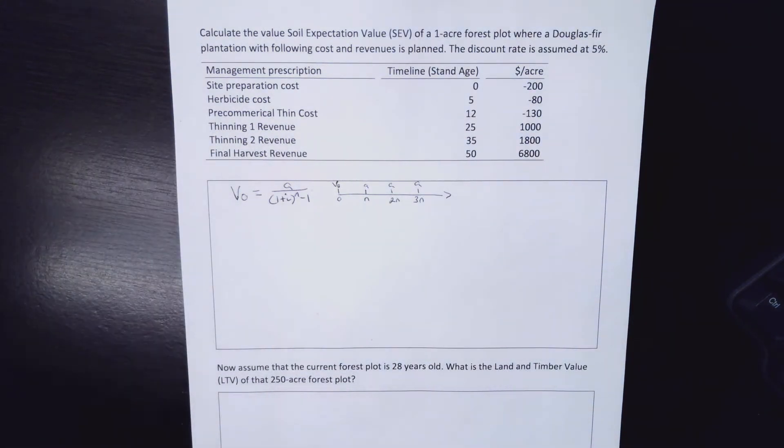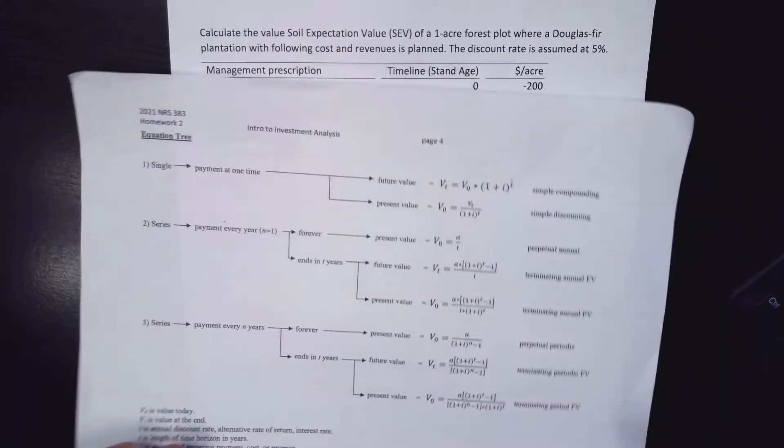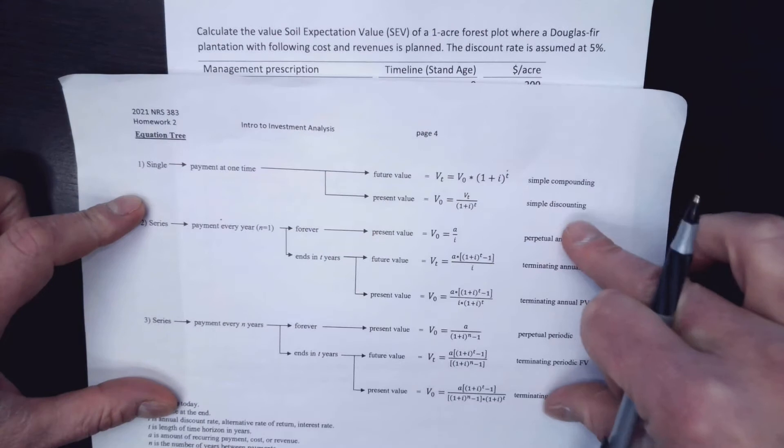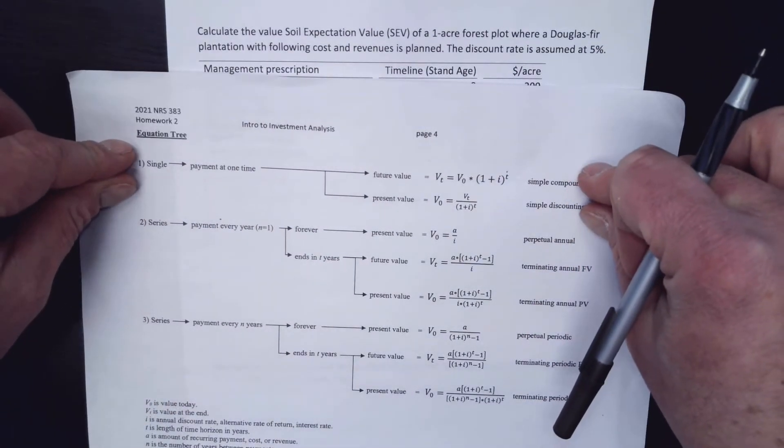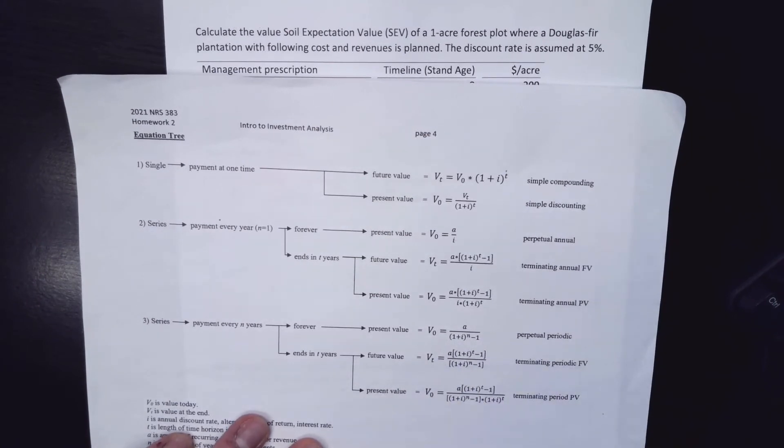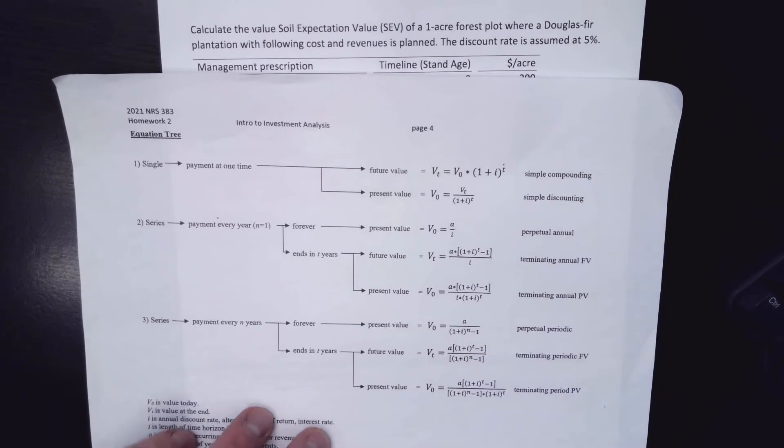And so what we've done a lot in our equations up until now is we've crunched numbers using our series equations first, and then we've used those top two equations to slide those numbers or move them around. So we have the crunching equations where we crunch these values down and then we can slide them to the right point. And our homework this time is going to really focus on these perpetual periodics for both the first and the second question within multiple parts.